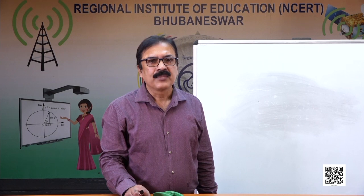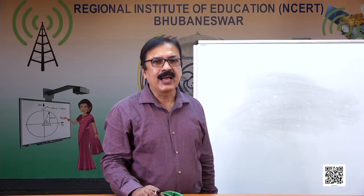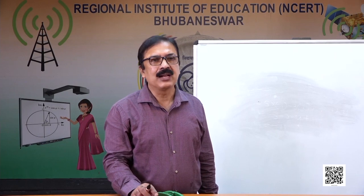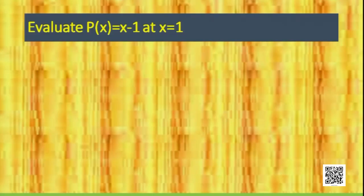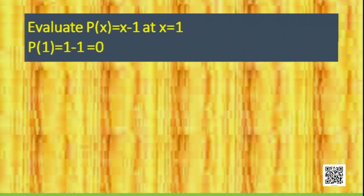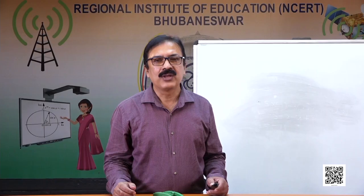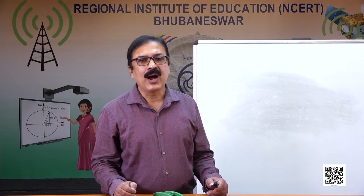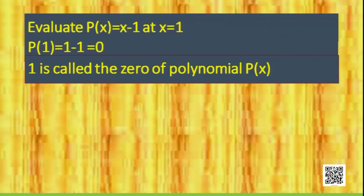Now let's see the polynomial P(x) = x − 1 at x = 1. We write P(1): replacing x by 1 gives 1 − 1 = 0. So for x = 1, the value of the polynomial is 0. We can call 1 the zero of polynomial P(x).